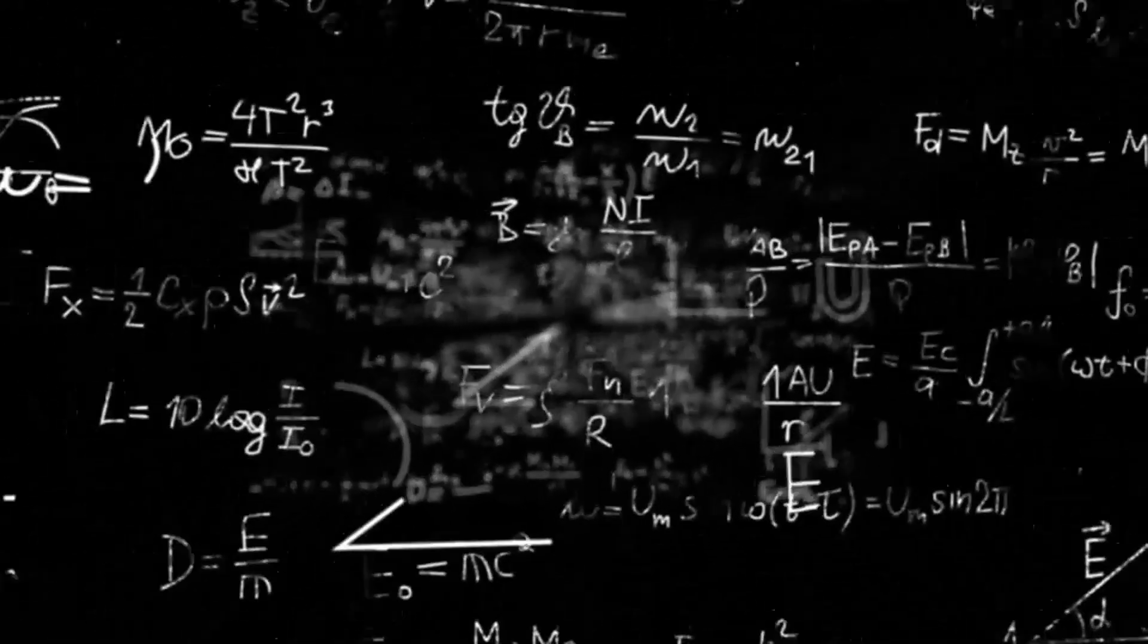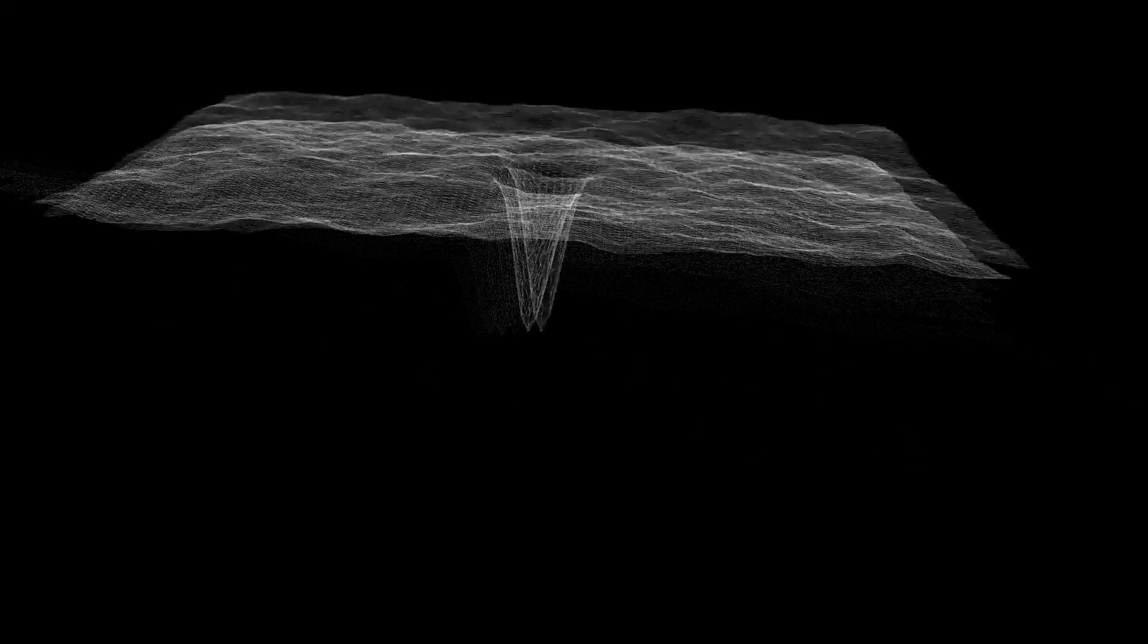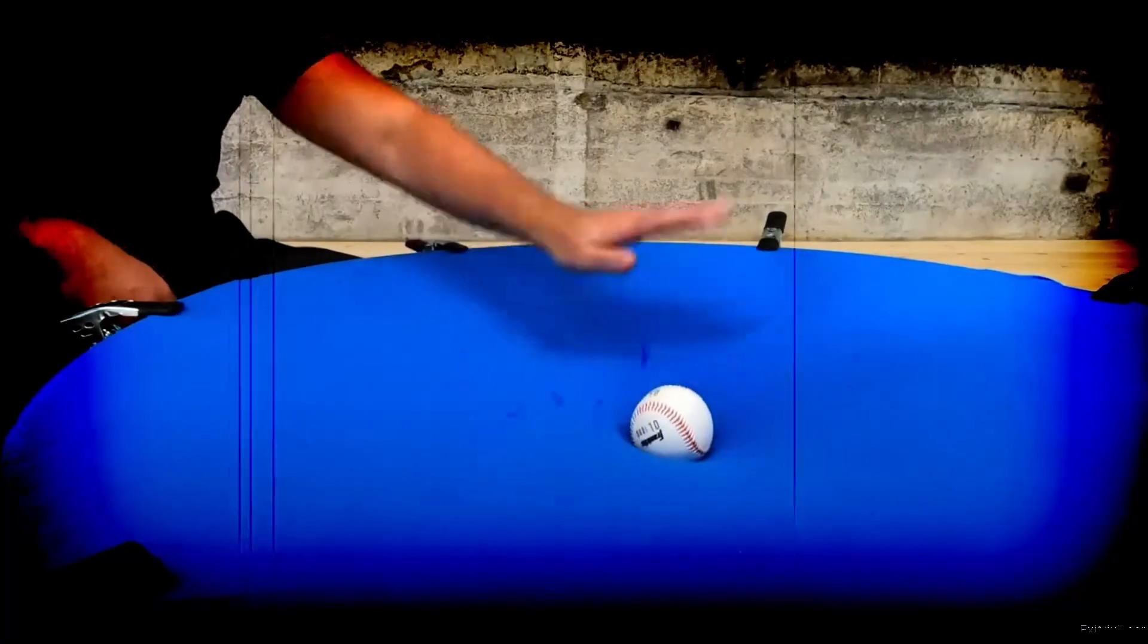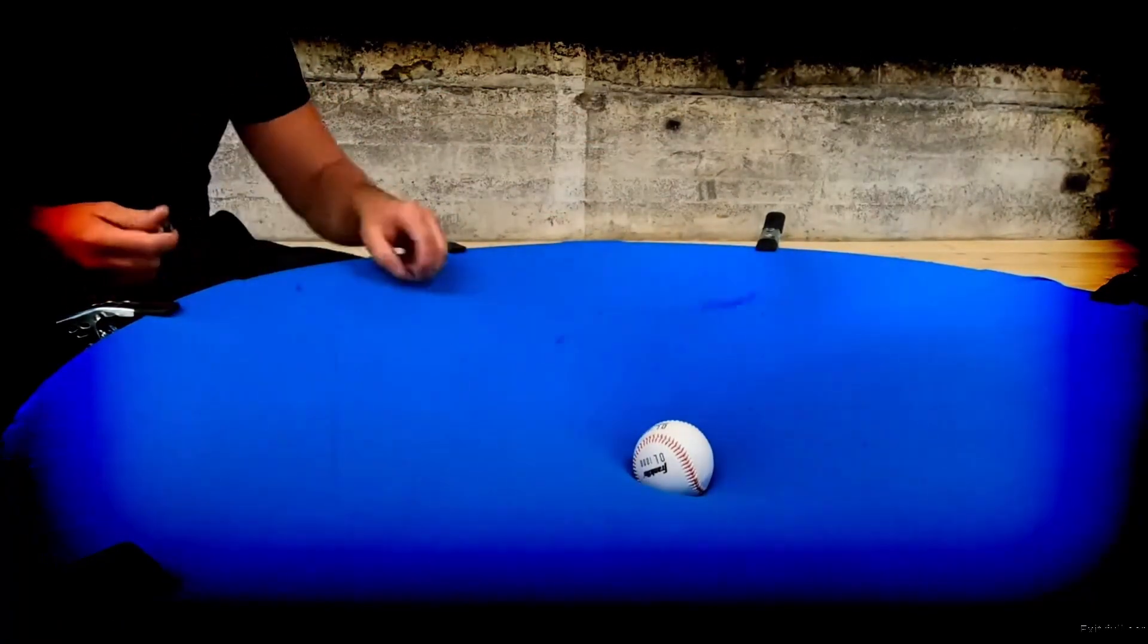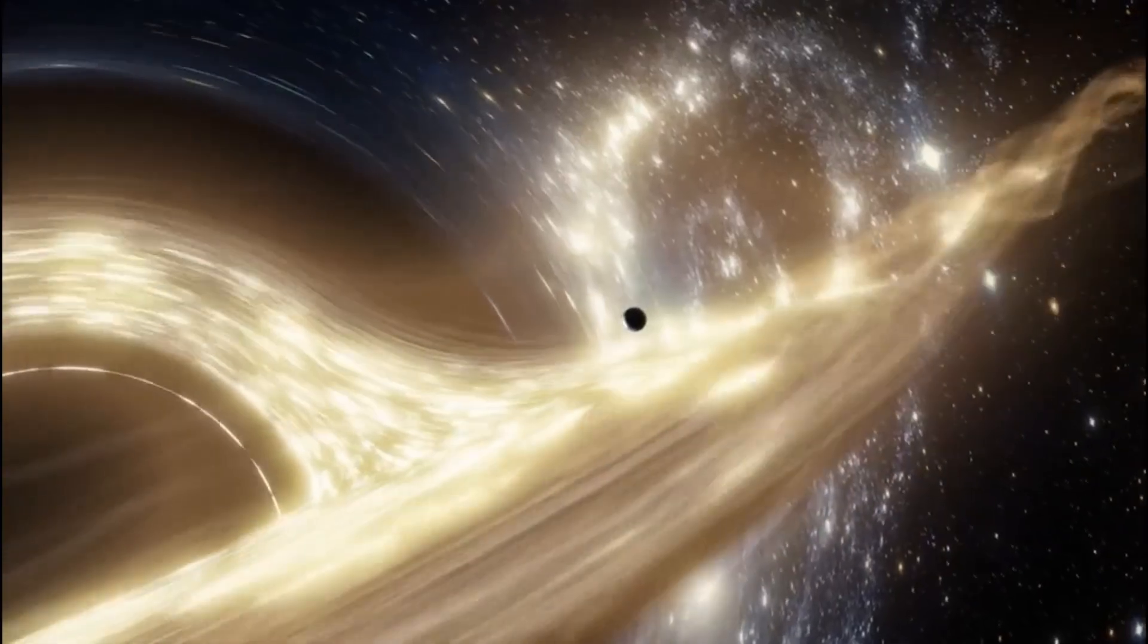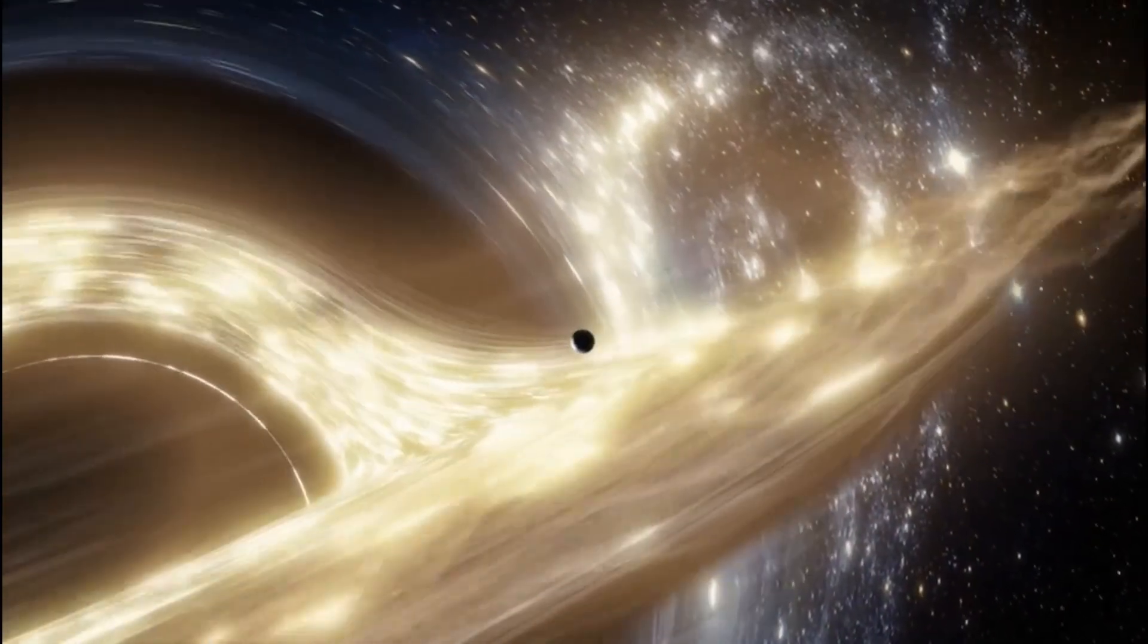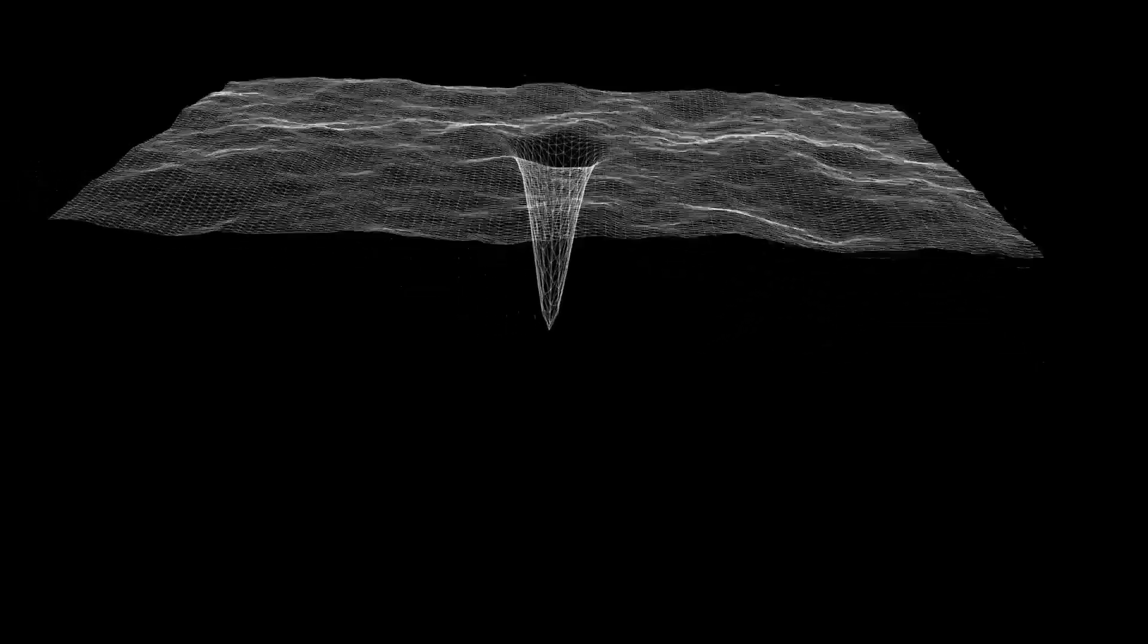At a singularity, two things happen that our brains struggle to comprehend. First, density becomes infinite. Now when I say infinite, I don't mean really, really big. I mean literally infinite, without limit or end. Second, the curvature of spacetime also becomes infinite. To understand what this means, picture a bowling ball placed on a stretched rubber sheet. The ball creates a dip in the sheet, right? That's similar to how massive objects bend spacetime around them. But at a singularity, that dip becomes infinitely deep. It's like the rubber sheet develops a hole that goes down forever.